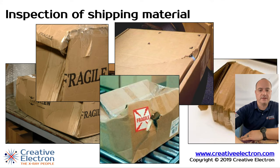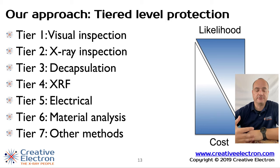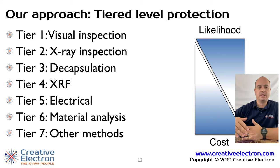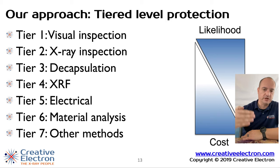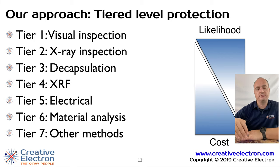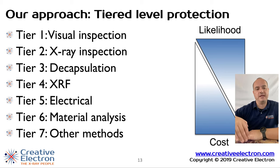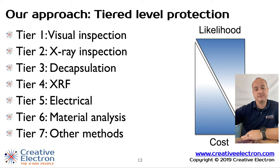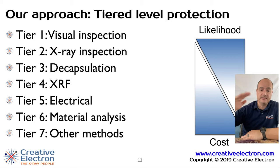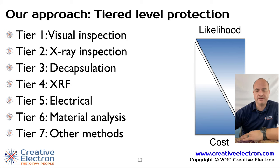We like to show the approach to fight counterfeit components as a tiered level approach. Starting with visual inspection, where you look at different aspects of the package — from the shipping package all the way to the component itself — followed by X-ray. These first two tiers are critical; you have to do them. Then as you need more detail, you can apply decapsulation, X-ray fluorescence, electrical tests, material analysis, and other methods. As you go deeper, it gets more expensive.